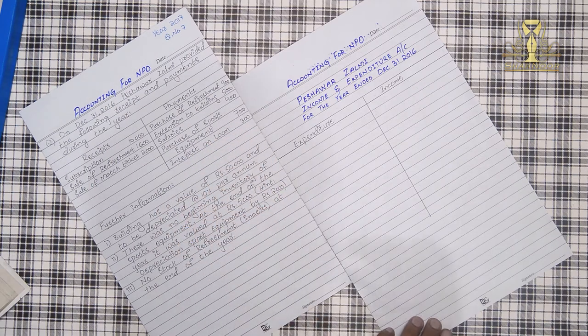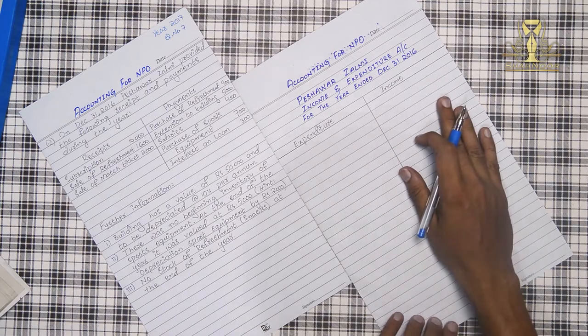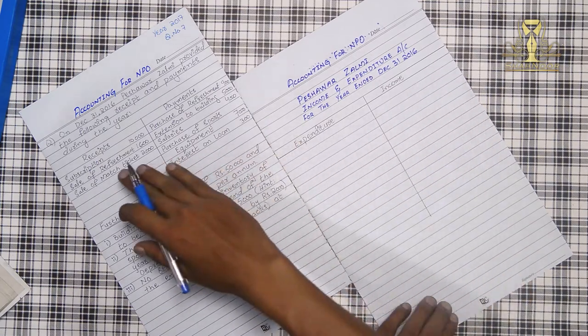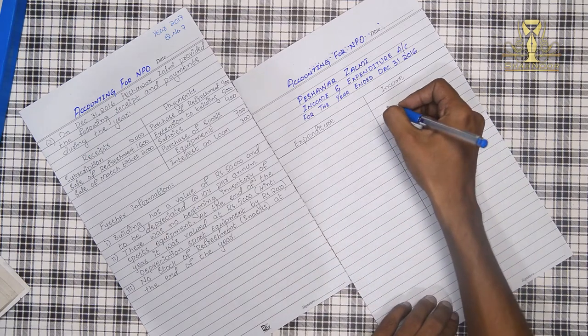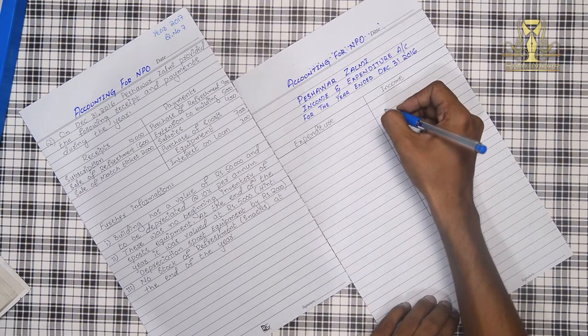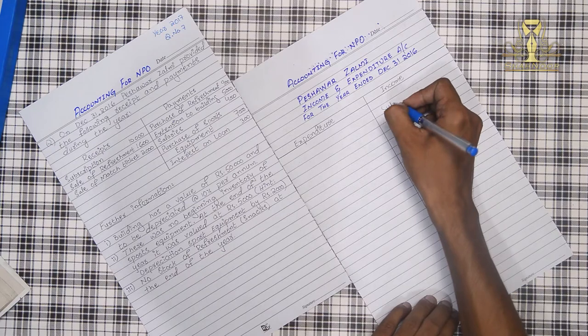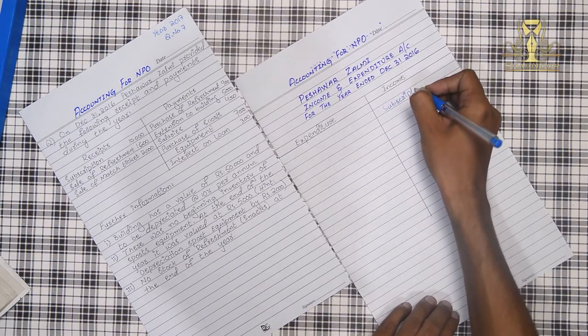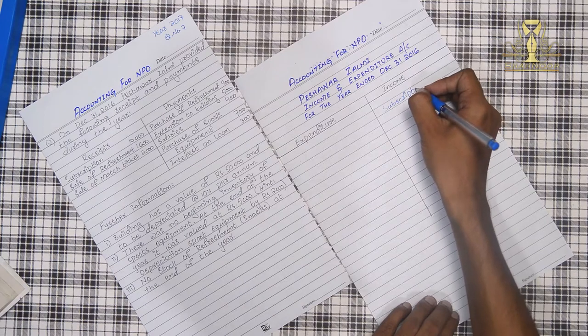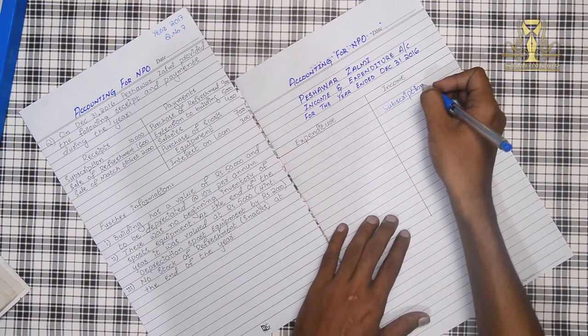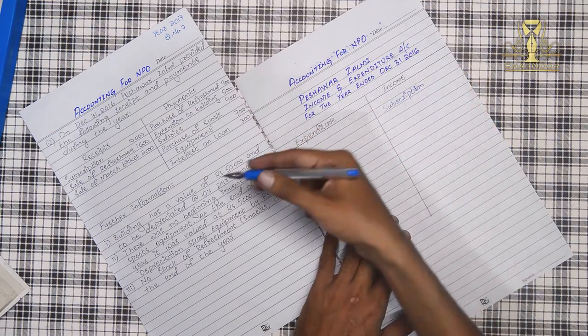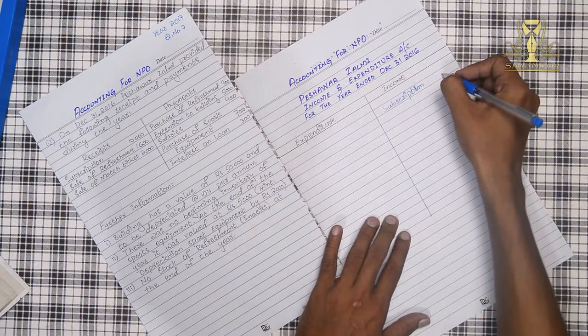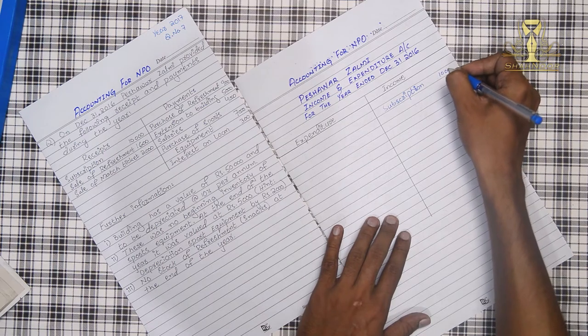First of all we will start with income site information from the receipt site. First of all we will start with subscription. Subscription amount is 10,000. We have seen additional information and more detail so it will be 10,000 as it is.